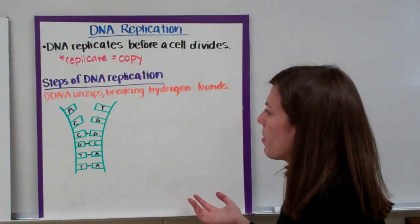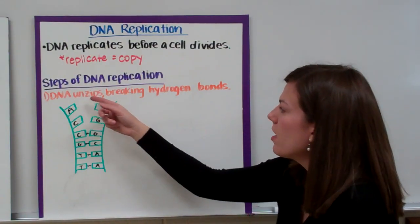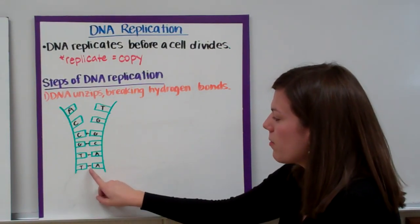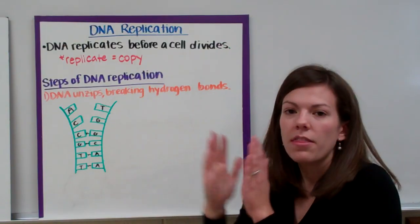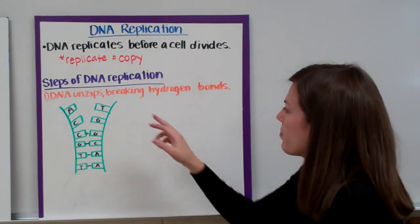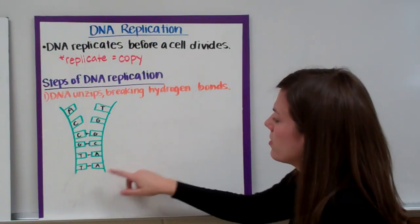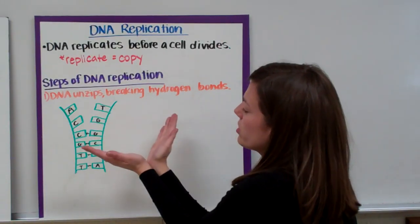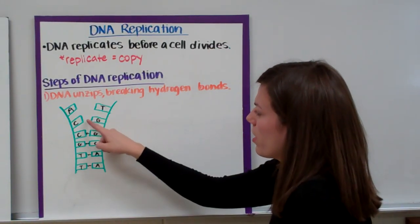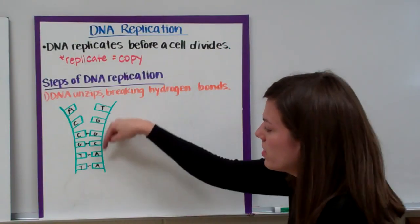Let's look at our steps of DNA replication. We start by unzipping our DNA. When we unzip our DNA, we have to break those hydrogen bonds that hook the two strands of DNA together. So as you can see here, our two strands of DNA are unzipping, and we already have two hydrogen bonds broken. It will continue to unzip.